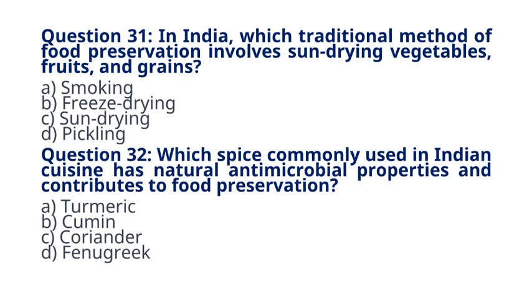Question 32. Which spice commonly used in Indian cuisine has natural antimicrobial properties and contributes to food preservation? A. Turmeric. B. Cumin. C. Coriander. D. Fenugreek. The correct answer to question 32 is option A. Turmeric. Explanation. Turmeric, with its active compound curcumin, possesses natural antimicrobial properties and is a common ingredient in Indian recipes.